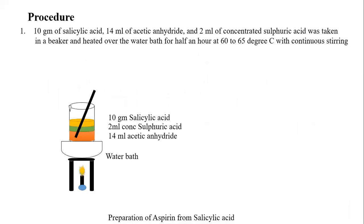For the procedure, we take a beaker and add 10 grams of salicylic acid, 2 ml of concentrated sulfuric acid, and 14 ml of acetic anhydride. We then place it on a water bath and heat it for half an hour.